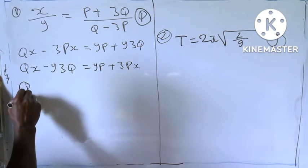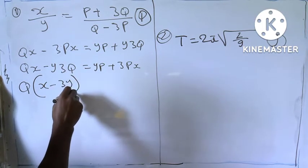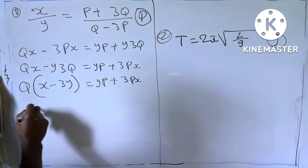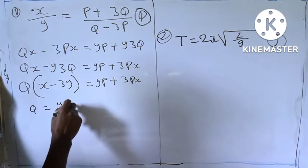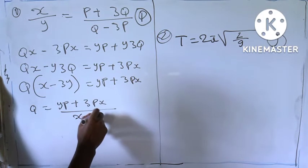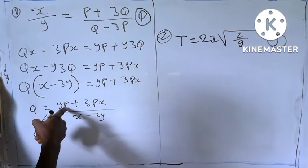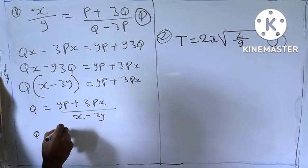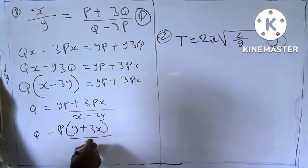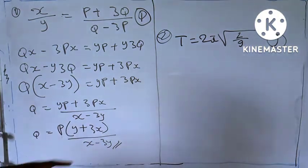Let's factor out q. So we have q bracket open x minus 3y equal to yp plus 3px. So q equal to yp plus 3px over x minus 3y. Here we have p in both terms, so let's factor out p. So p bracket open y plus 3x over x minus 3y. So this is the answer for the first one.